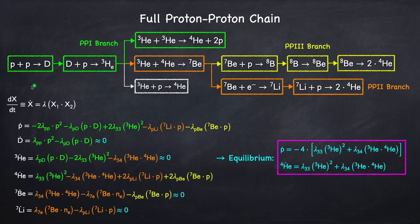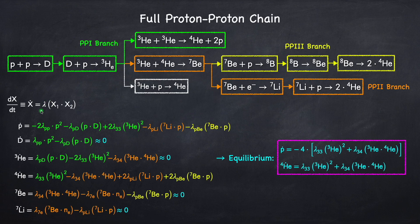To set up these equations we use this expression for the nuclear rate of a given species x, which I derived in Stellar Physics 5c. What this says is the time rate of change of a species x, which I'm defining as x-dot, is equal to some rate lambda, which in general is highly temperature dependent, times the product of the parent species. So x1 and x2 are the two nuclei that come together for a given nuclear reaction. Lambda will differ for every nuclear reaction.